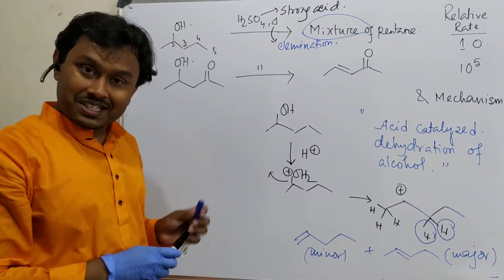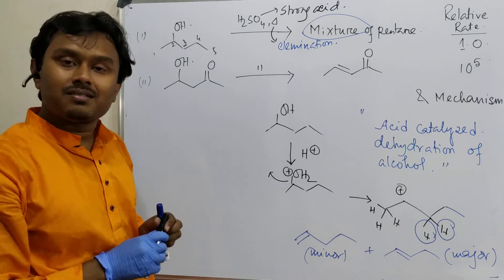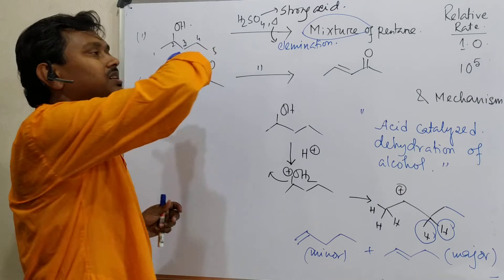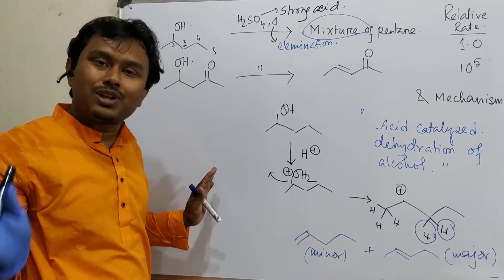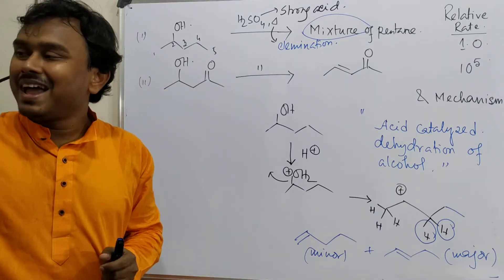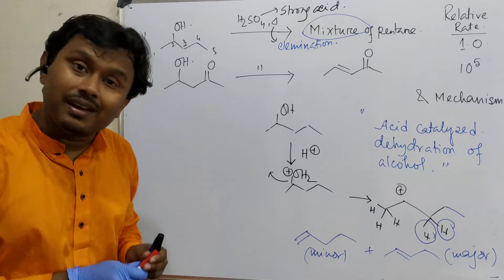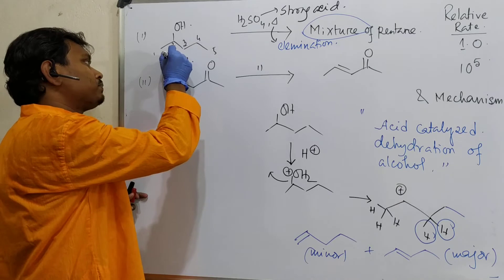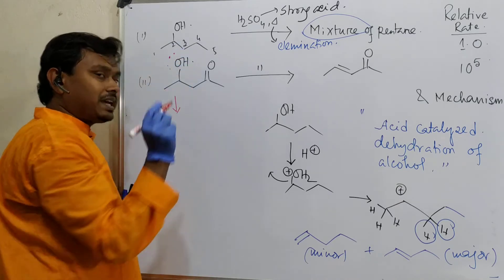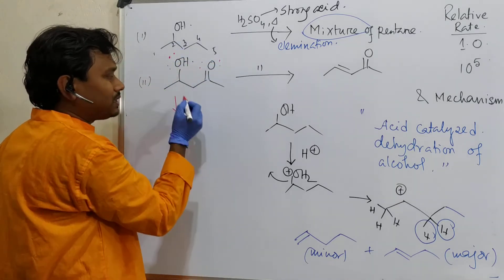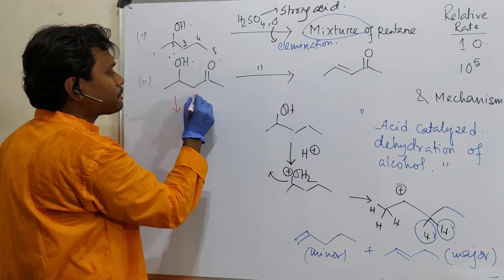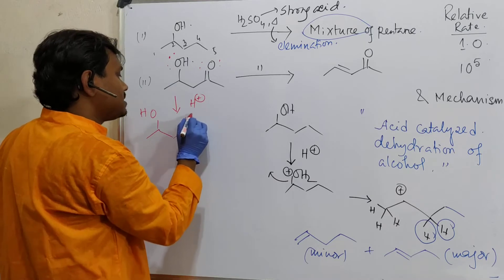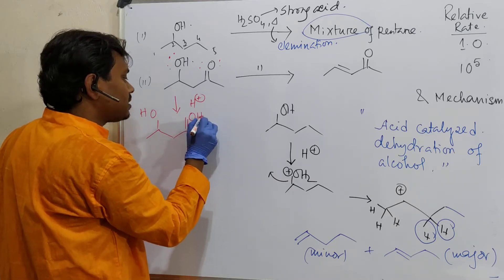Now the interesting part about this beta-hydroxy carbonyl. Generally we think that at the initial stage it will be protonated and elimination will happen. No, this will not happen. And that is the interesting part which we will learn. See, what is expected? First, acid-base reaction. This protonation is also acid-base reaction, but there is another reaction also. This could be protonated. What is the thing? What is the expected product? This.